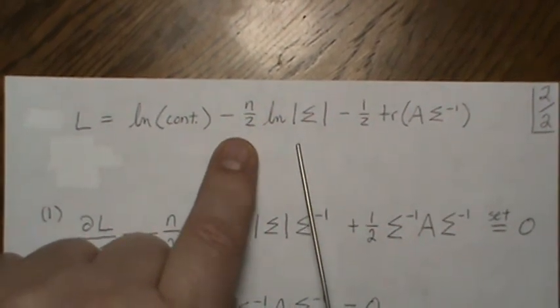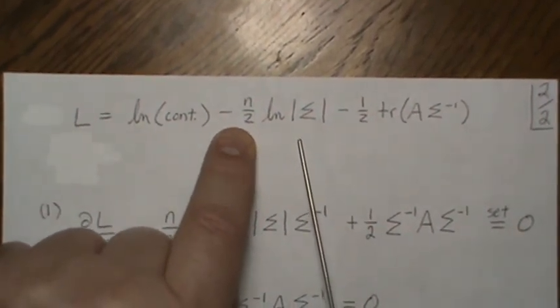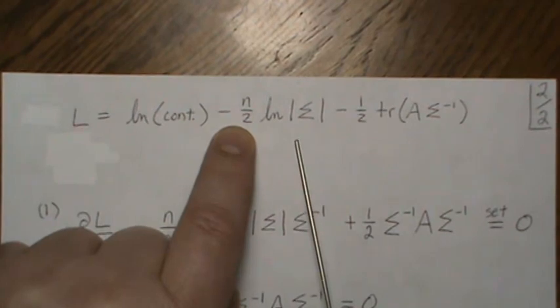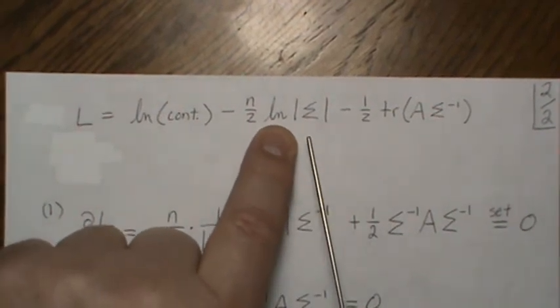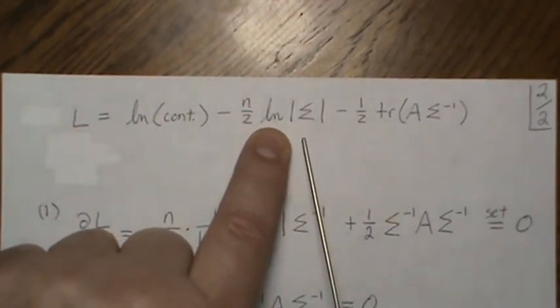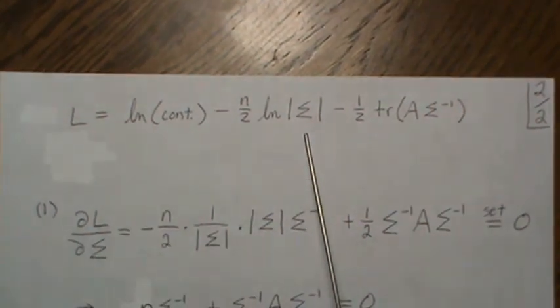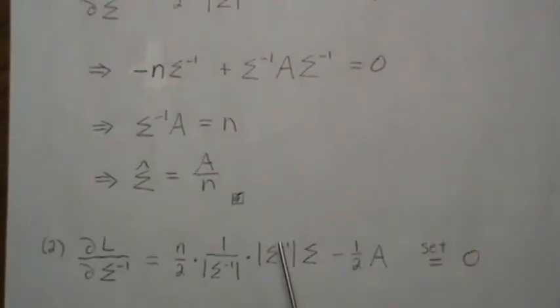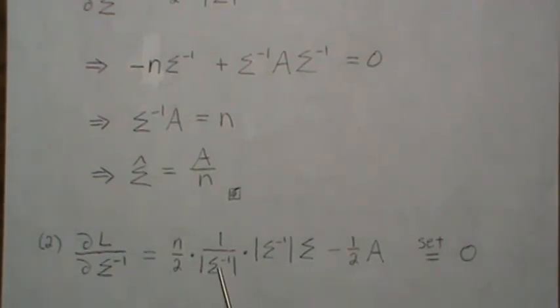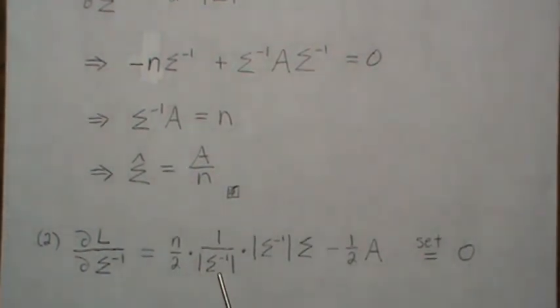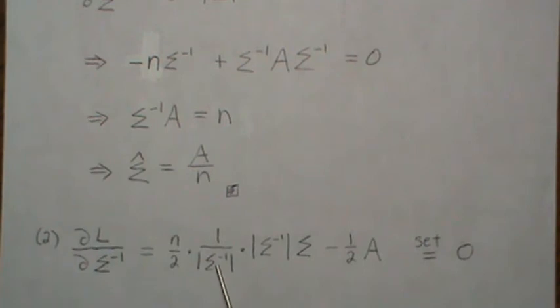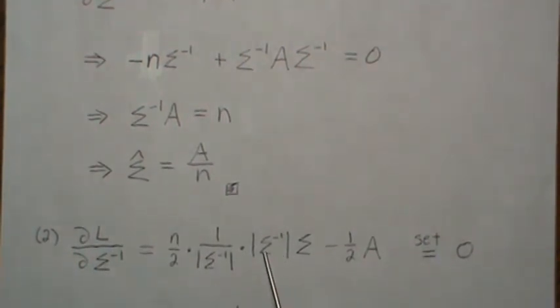So when we take the derivative of this, we get n over two times the derivative of this log. So it'd be one over the determinant of sigma inverse, and then we get this. So it's one over the determinant of sigma inverse, and then it's times that sigma inverse, and then it's the inverse of that sigma inverse, which is just sigma.